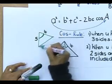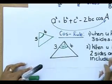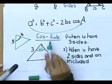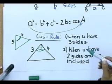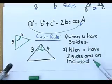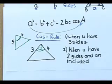So, an included angle is in between two sides. So, when can I use the COS rule? When I was given three sides, and when I have two sides and an included angle.